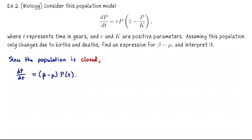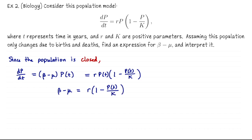Let's compare that expression to the formula at the top. We know this also has to equal r·p times (1 minus p over k). They both have p of t, so removing that from both sides, we're left with beta minus mu equals r times (1 minus p of t over k). Equivalently, you could write this as negative r over k times p of t plus r — and that's a line. We can treat the population as an independent variable and beta minus mu as a dependent variable, in which case this expression is the equation of a line.